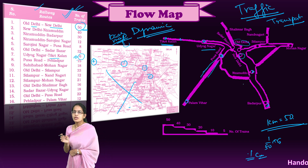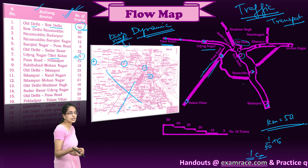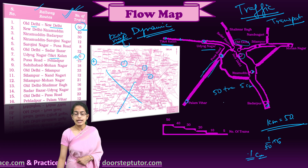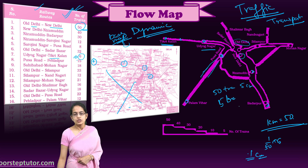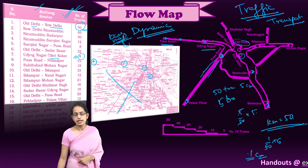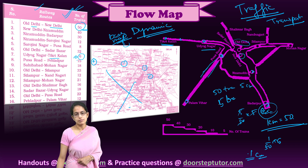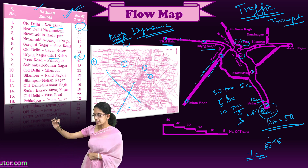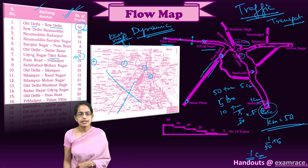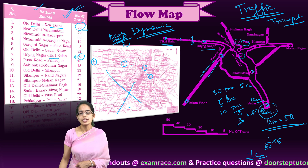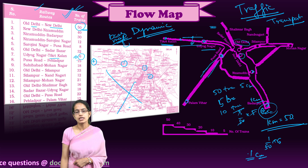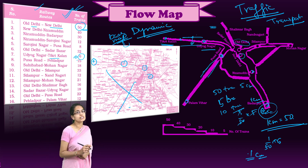Once the locations are marked, we decide the line thickness based on train numbers. For example, if 50 trains corresponds to a 5-centimeter line, then 5 trains would give (5/50) × 5 = 0.5 centimeters, and 10 trains would give 1 centimeter. So for 50 trains the line width is 5 centimeters, but for 5 trains it is only half a centimeter — showing a significant difference. This proportional line width is the basis for understanding flow maps.